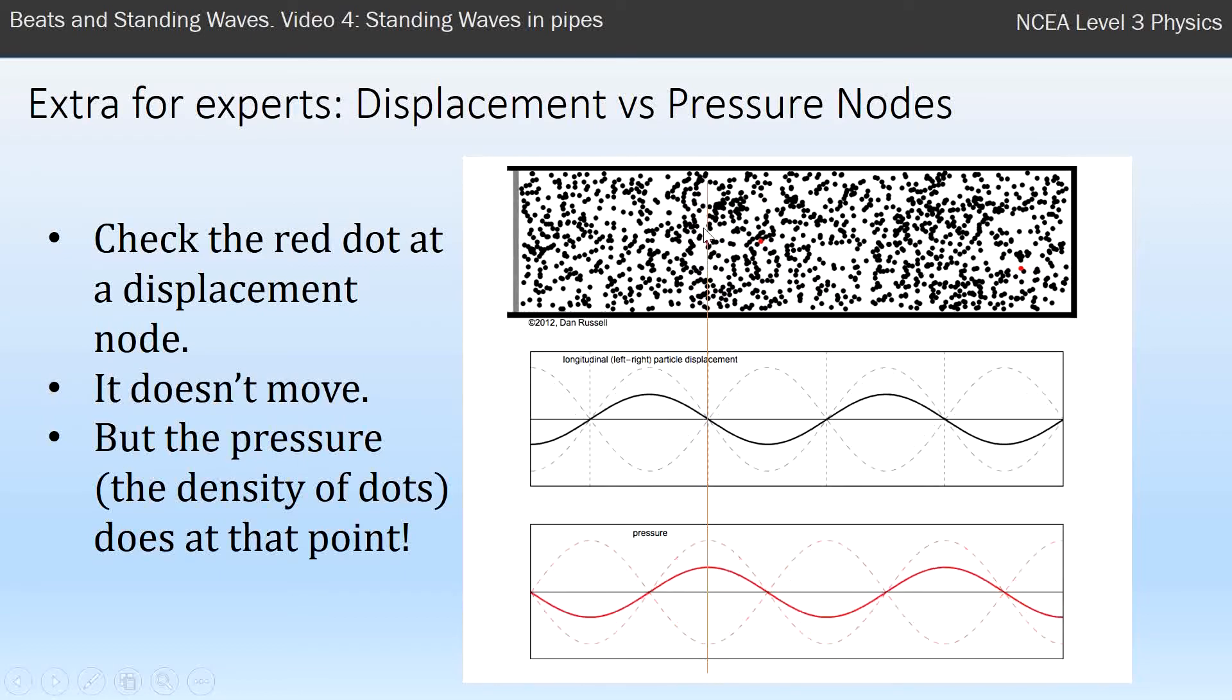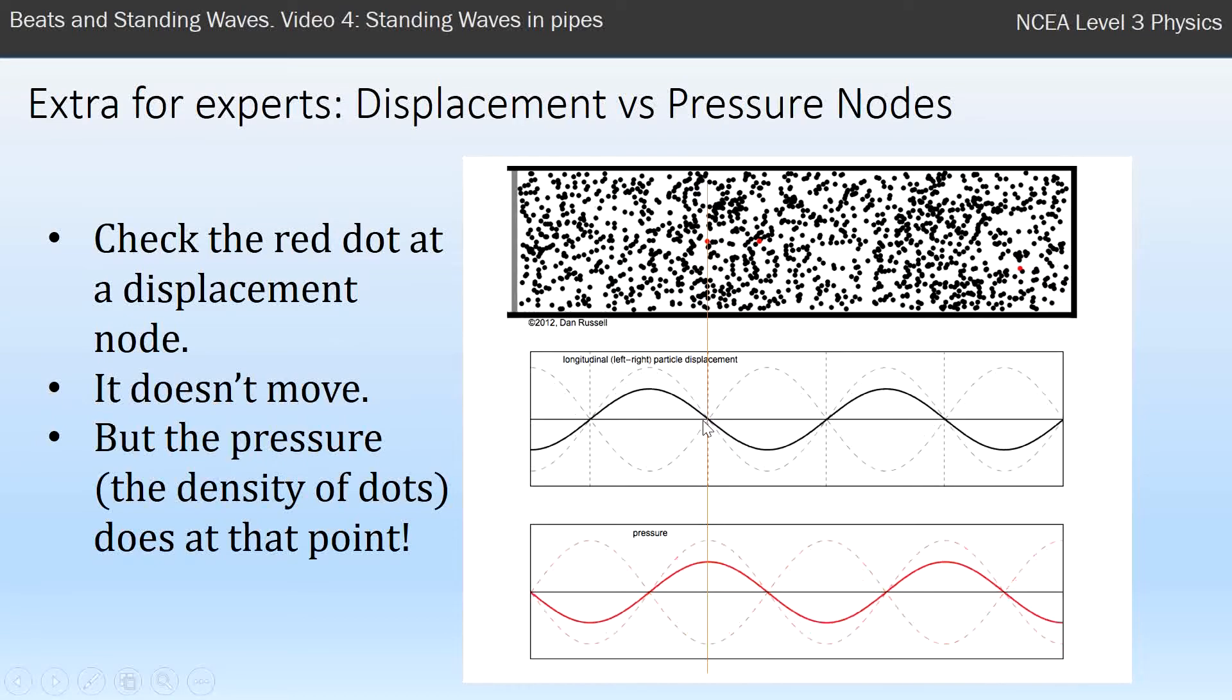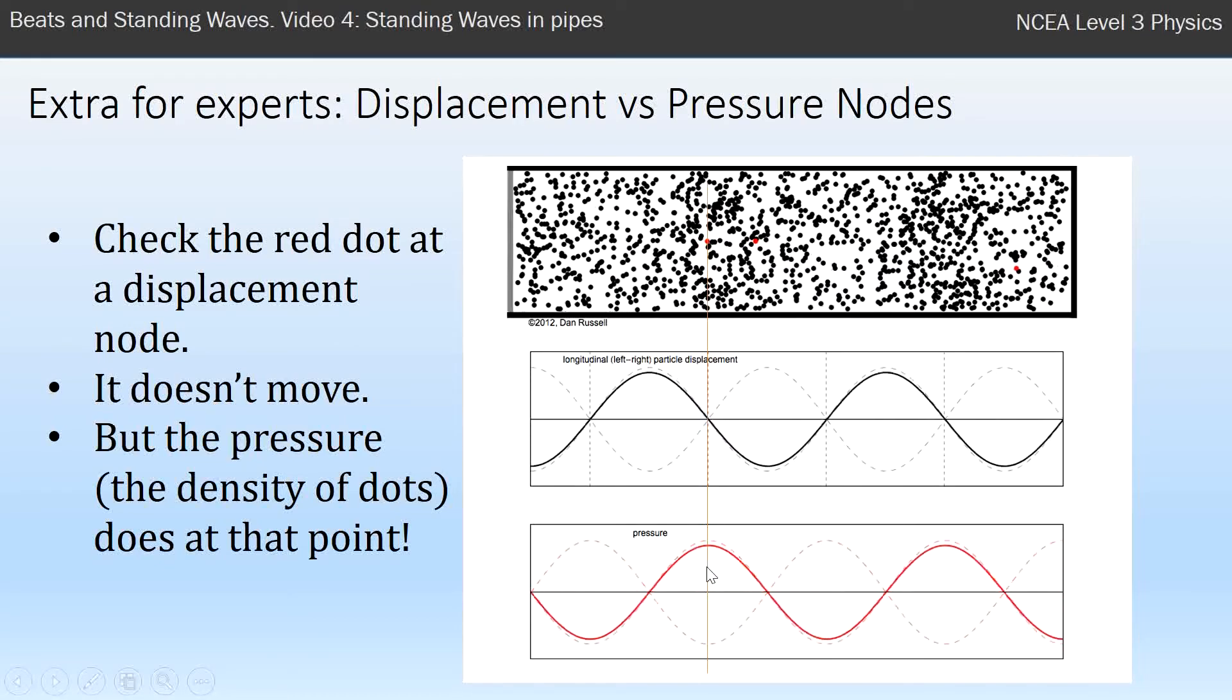If you just concentrate on where this red thing is, you see it goes from being squashed together, lots of atoms, to spread apart, to squashed together, to spread apart, to squashed together, to spread apart. So it turns out that this is a displacement node, but it's actually a pressure anti-node.